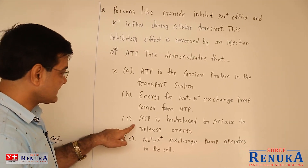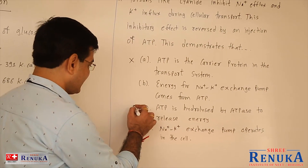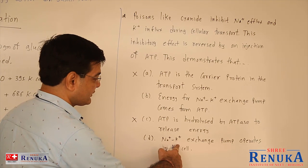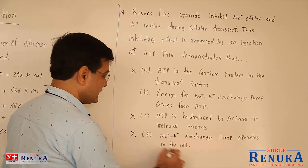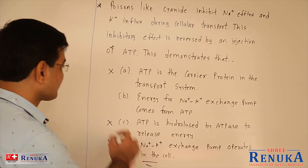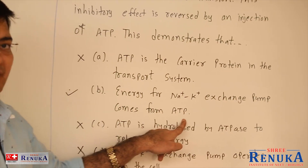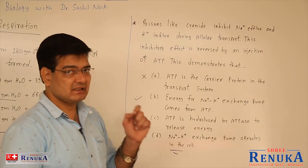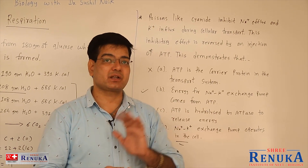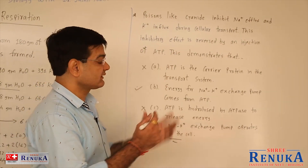Option A says ATP is the carrier protein in the transport system — that is true, but this does not specifically demonstrate the sodium-potassium pump. Option C says ATP is hydrolyzed by ATPase to release energy — again true, but it does not say anything regarding the sodium-potassium pump. Option D says sodium-potassium exchange pump operates in the cell — true, but the role of ATP is not mentioned. Therefore we select option B: energy for the sodium-potassium exchange pump comes from ATP. When ATP is injected, the sodium-potassium pump is carried out, because cyanide inhibits ATP production.